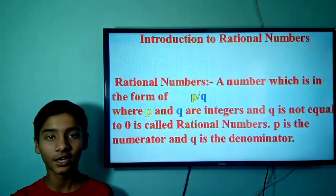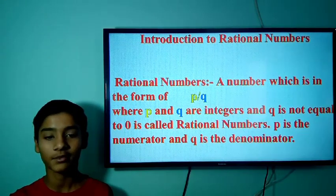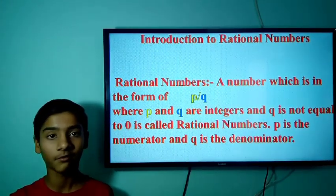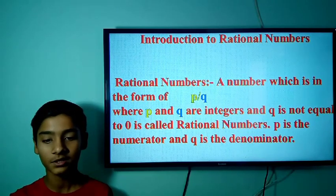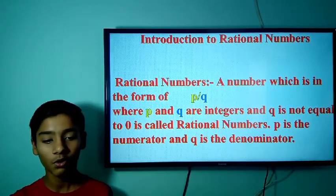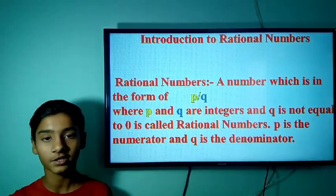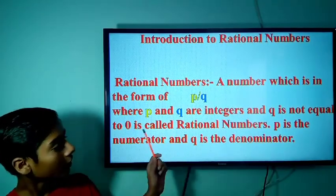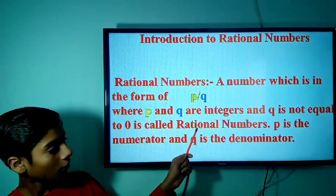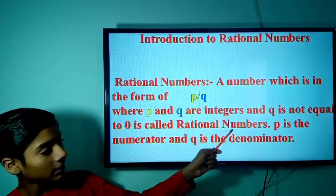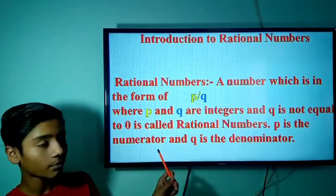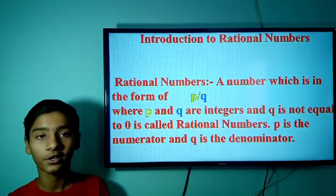Let's start with Introduction to Rational Numbers. What do you mean by Rational Numbers? A number which is in the form of P/Q, where P and Q are integers and Q is not equal to 0, is called a Rational Number. P is the numerator and Q is the denominator.